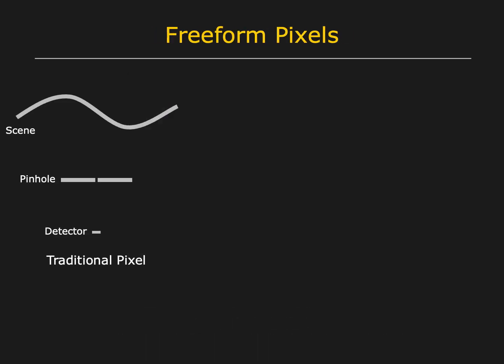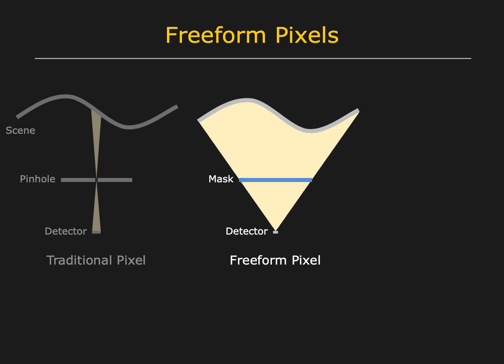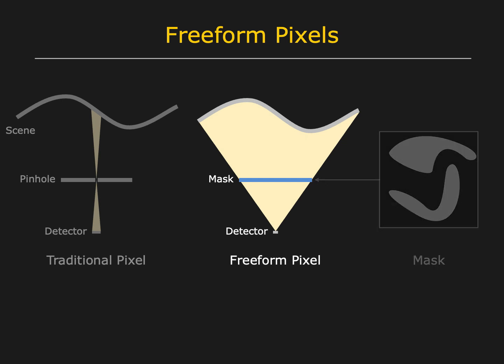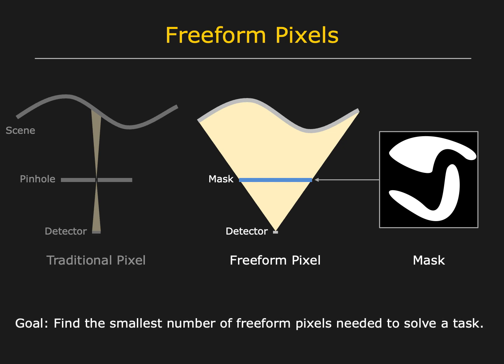In a traditional camera, each pixel is a tiny square that receives light from a small scene patch. Our approach is to use freeform pixels, where each pixel performs a linear projection of the scene. This is done by using a detector with an optical mask in front of it. A freeform pixel can take on any shape, which is determined by the transmittance function of the mask. Given a vision task, our goal is to find the smallest number of freeform pixels needed to solve the task.